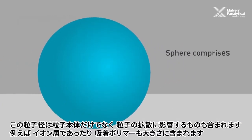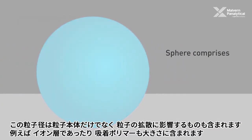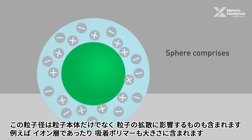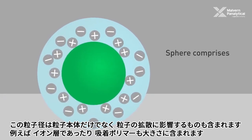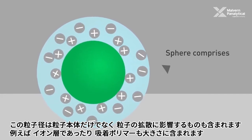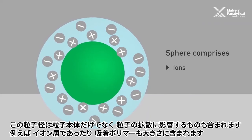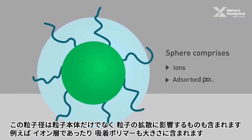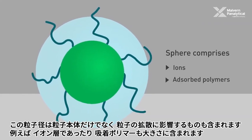This sphere comprises the core particle plus anything which is bound to its surface, for example any ions or absorbed polymers.